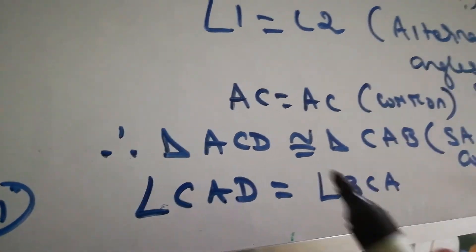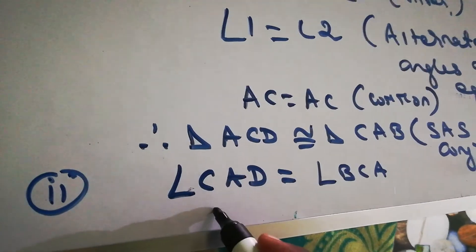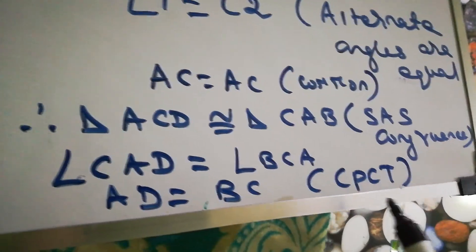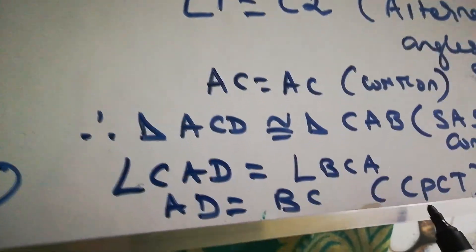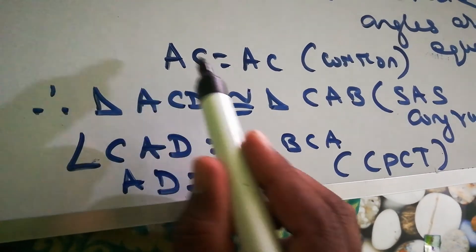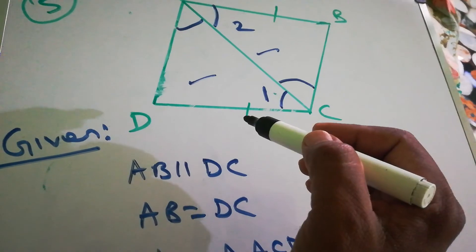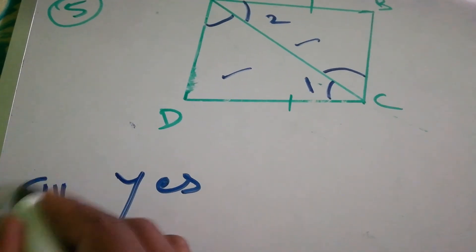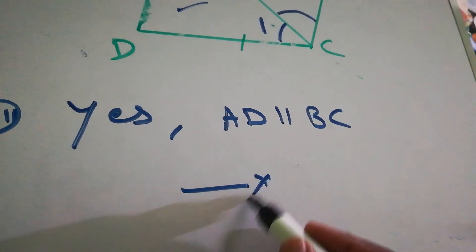The third question asks whether AD is parallel to BC. Since triangles ACD and CAB are congruent, by CPCT (corresponding parts of congruent triangles), AD equals BC. Since these are equal, AD is parallel to BC. Therefore, AD is parallel to BC. Exercise 13C is complete.